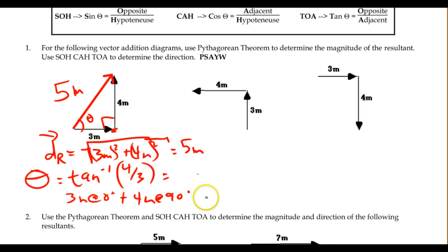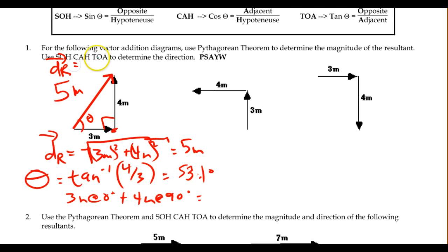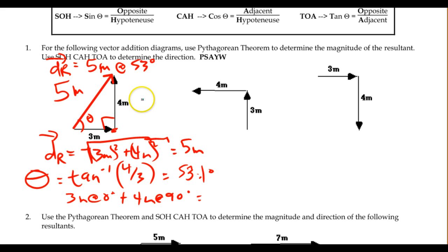That rounds to 53 degrees. So the final answer is: the resultant displacement equals 5 meters at 53 degrees. The resultant displacement is always the straight line from where you started to where you finished — we've worked with displacements before, and here we're just working with it in two dimensions.